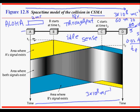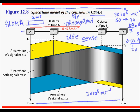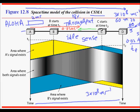When A starts transmitting, the bits start to travel. But they have not yet reached C. If at that moment C senses the channel, it finds no transmission going on — because A's bits haven't arrived yet. So C also starts to transmit. Then C's signal travels and both signals collide somewhere in the middle. So there is still a small probability of collision with CSMA.